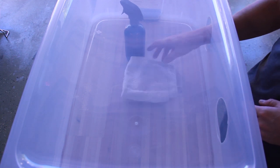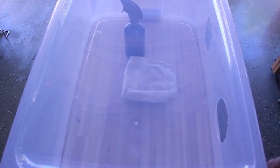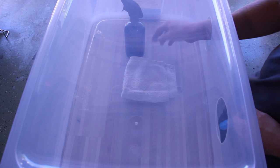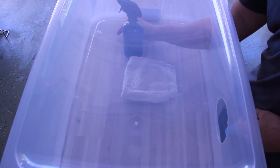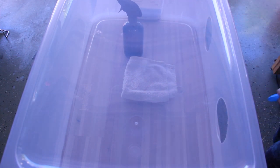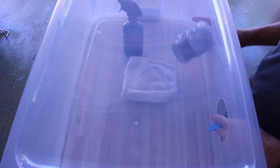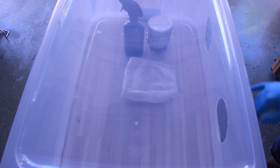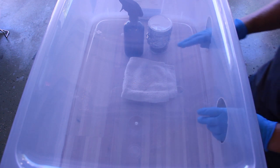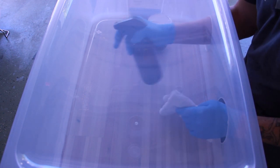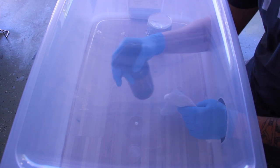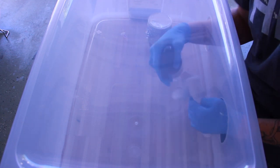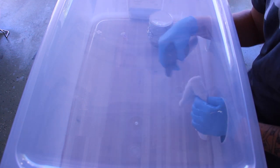I started by putting everything inside my still air box. I gloved up and got right to work. First thing I did was spray down the inside of the box with 91% isopropyl alcohol.